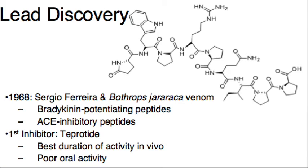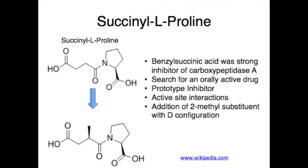The only problem with teprotide is that it displayed very poor oral activity due to its large molecular size and because it contained several peptide bonds, which made it unstable. In 1974, Cushman and Ondetti found that benzylsuccinic acid was a strong inhibitor of carboxypeptidase A, and agreed that the succinylcarboxyl group was most likely binding to the zinc ion in the active site of the enzyme. They hypothesized that a succinyl amino acid derivative could potentially inhibit ACE. Succinyl-L-proline showed inhibitory effects on angiotensin-1 without having effects on angiotensin-2, and was observed to be orally active in rats.